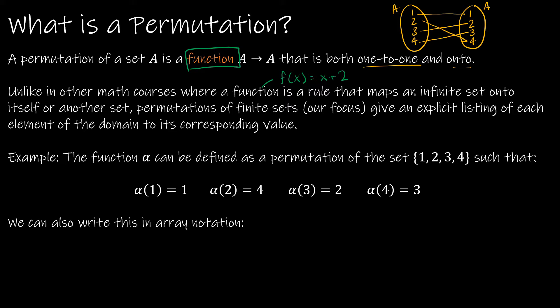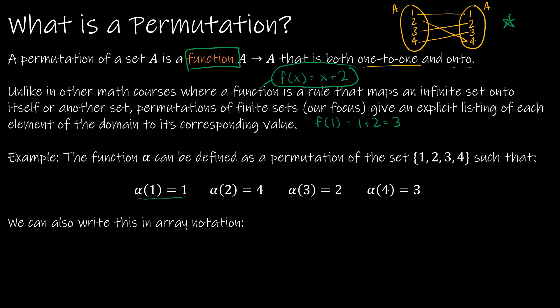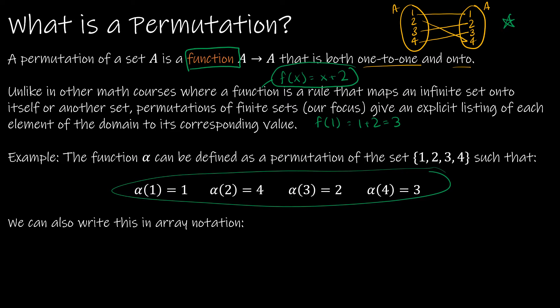So this is an example of a permutation. The permutation — the function — is called alpha and it is defined as this listing. Alpha of one is equal to one, the same way that I would say f(1) using this function I just made up would be one plus two, or three. So it's the same exact thing; we just don't have to do the math because the listing is given for us. Alpha of one is equal to one, two maps to four, alpha of three is two, alpha of four is three. Listing it in this way is not super helpful because it's just a listing.